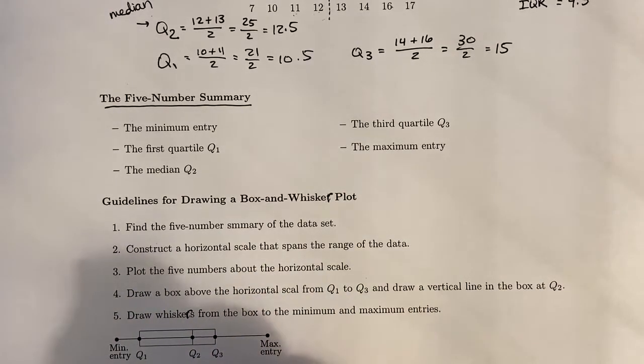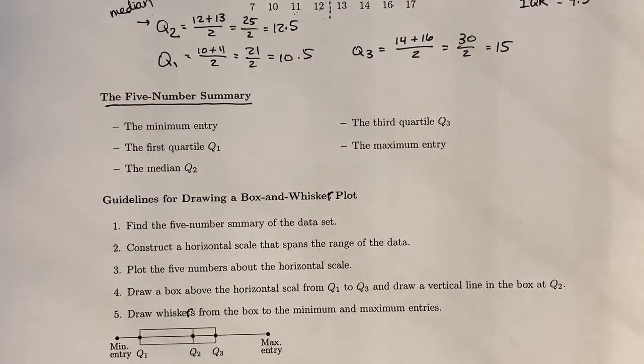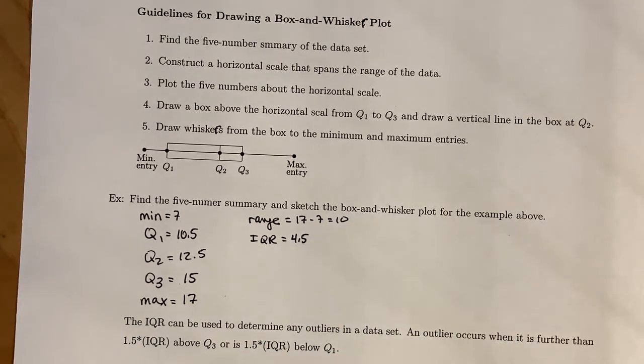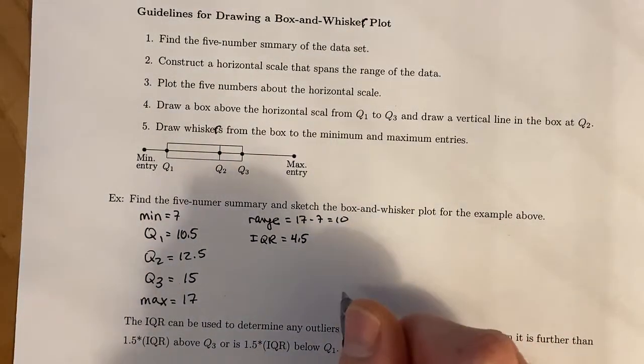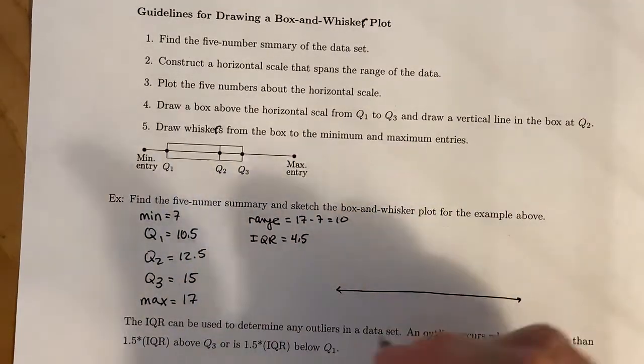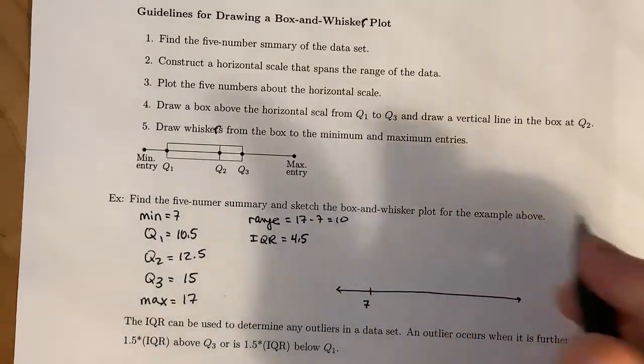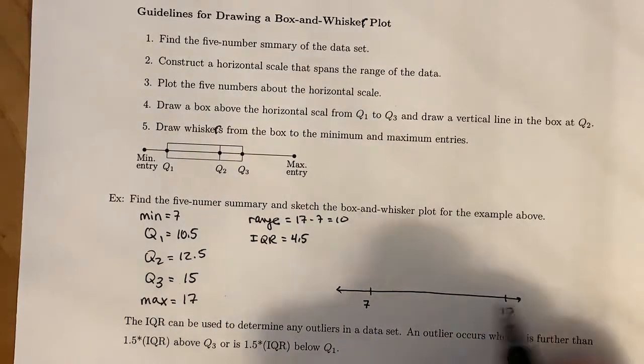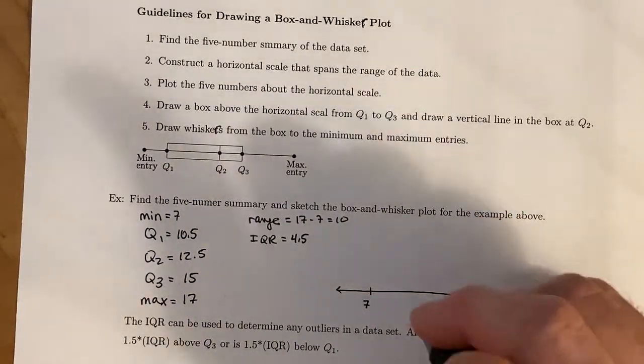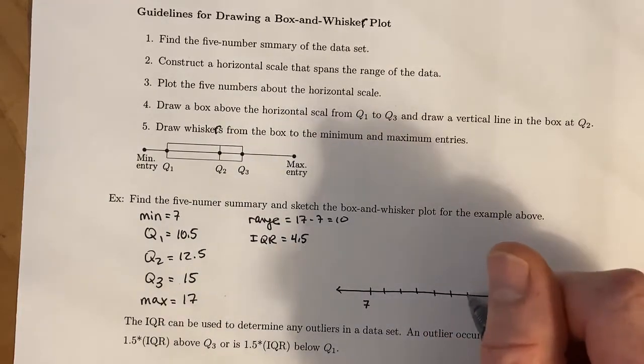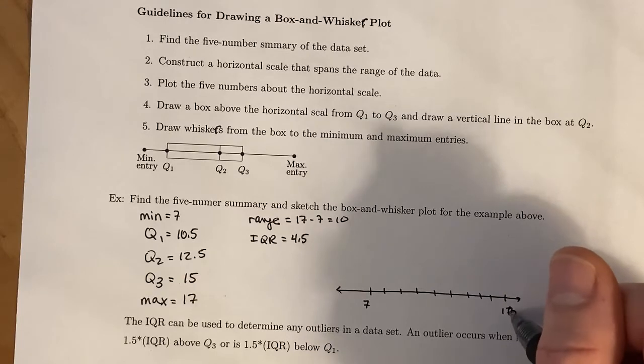Our IQR was 4.5. Range and interquartile range are slightly different—that's just something we have to be conscious of when we're talking about these things. I'm going to draw a copy of the number line, and I'm going to start at 7 and end at 17, and divide this up into 10 parts. So there's 8, 9, 10, 11, 12, 13, 14, 15. Let's call this 16, and that's 17.